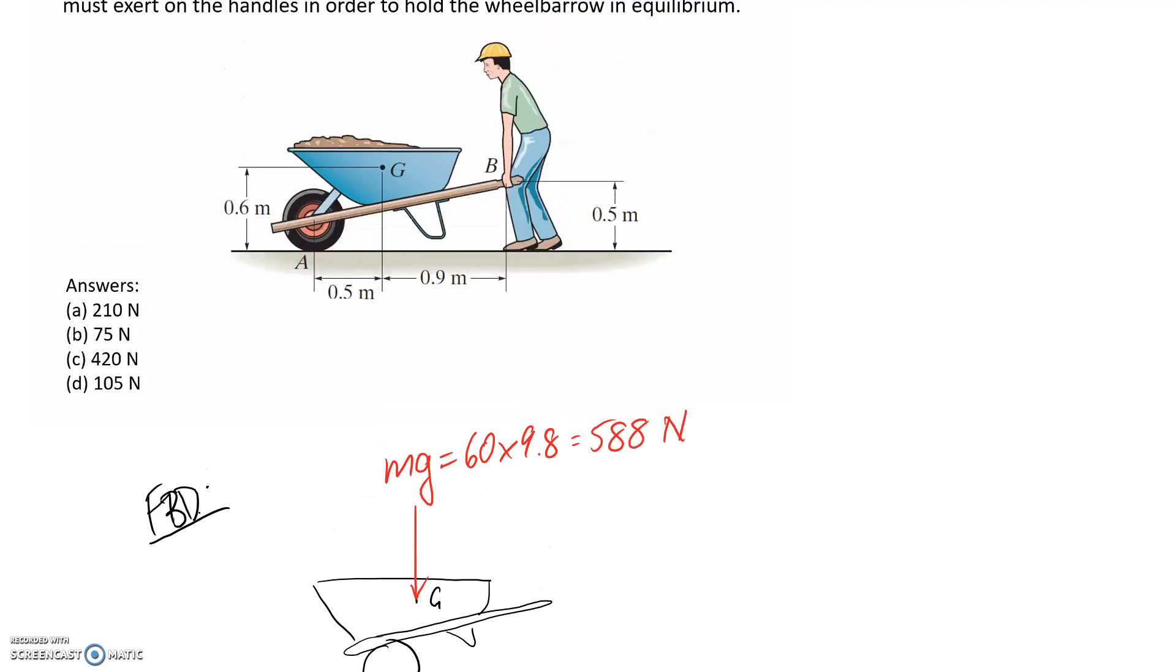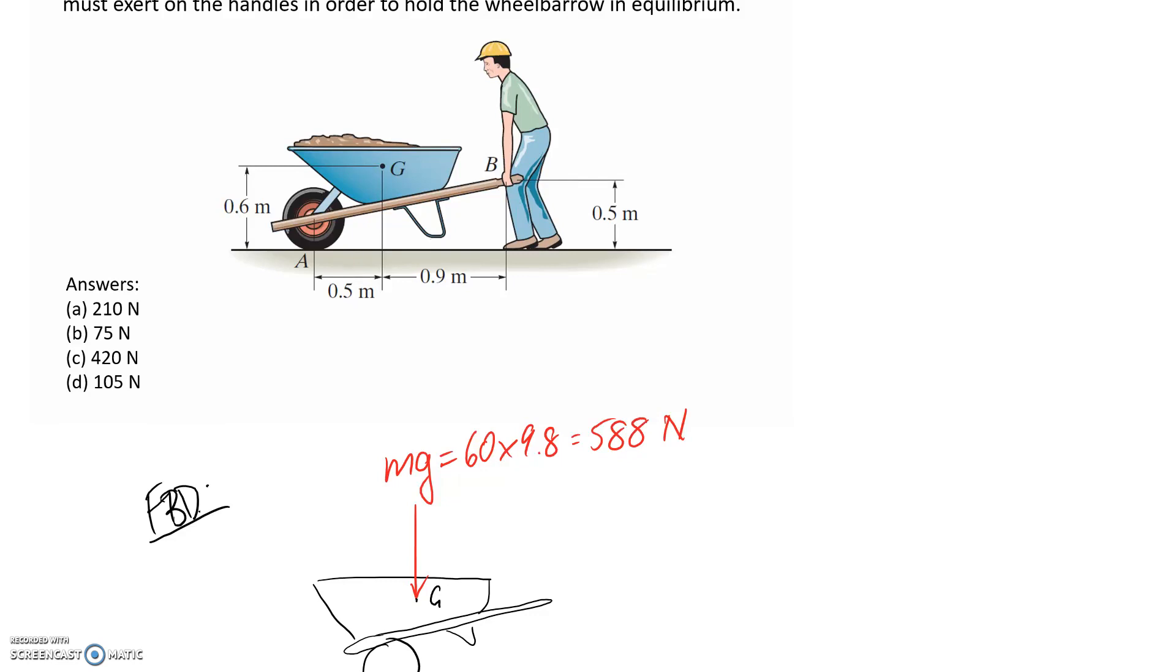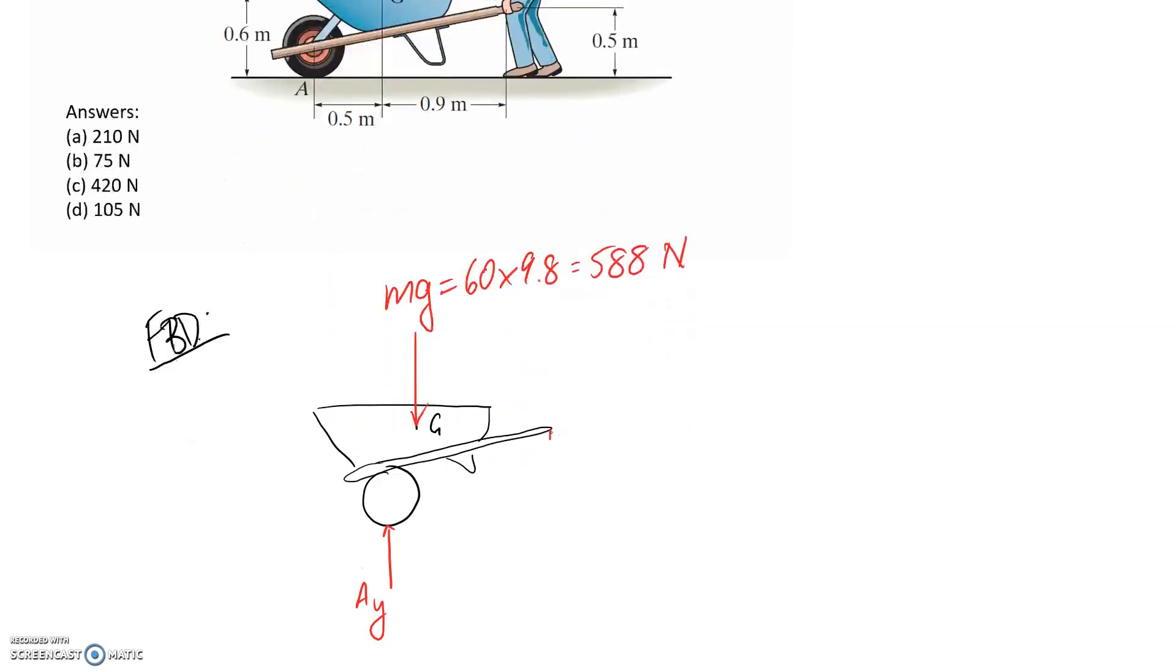And then what we're asked to find is the force that the man must exert. So technically this man could push the wheelbarrow forward and he could pick it up and down as well. So that means that there could be both a horizontal and a vertical component of this force. So let's call it By and Bx. I've just assumed directions for these and also this one. Remember it'll come out negative if it's in the wrong direction.